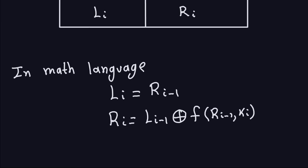So again, there are two things we need to look at in detail: what the F function does exactly, and how we get the sub-keys from the actual key — the key schedule. In the next video, we're going to look at the inner structure of the F function, opening that black box and seeing exactly what it does. So I'll see you in the next video.